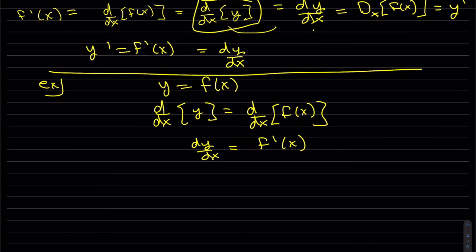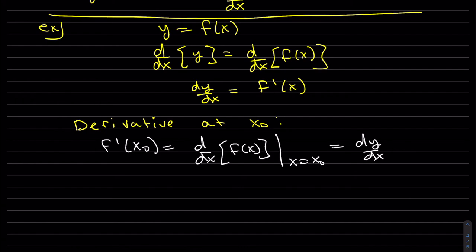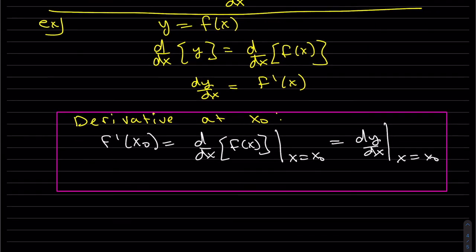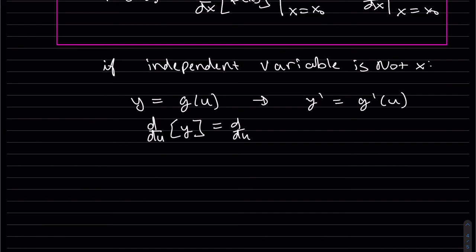For the derivative at a point: f prime at x naught, or d/dx of f(x) evaluated at x = x naught, or dy/dx evaluated at x = x naught — all three represent the same thing: the derivative evaluated at x naught.